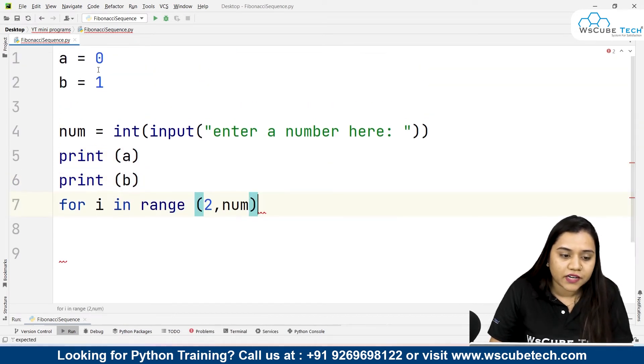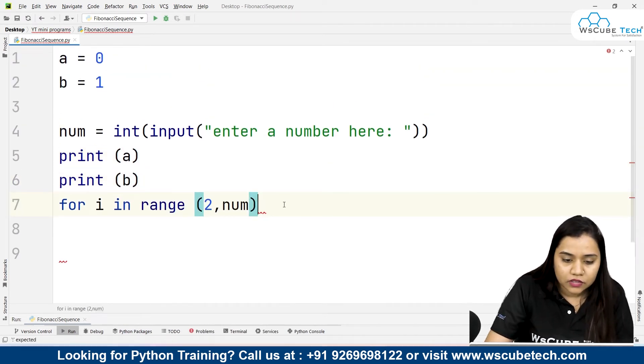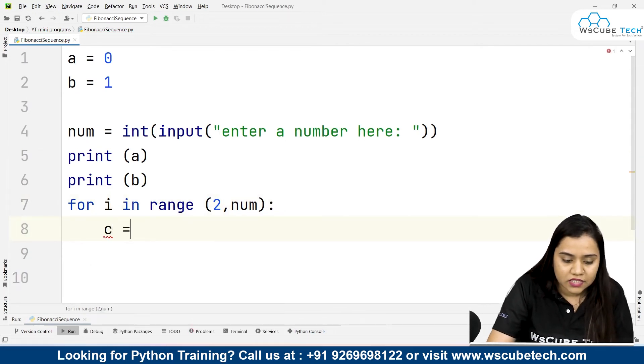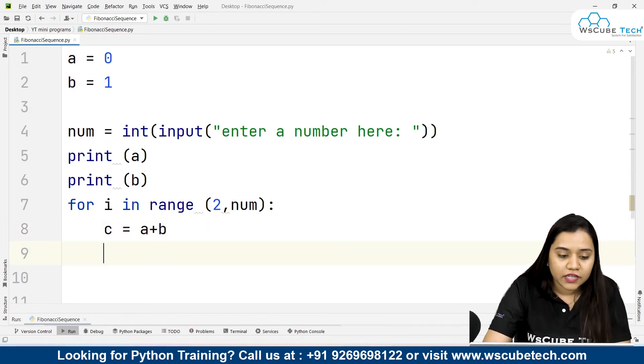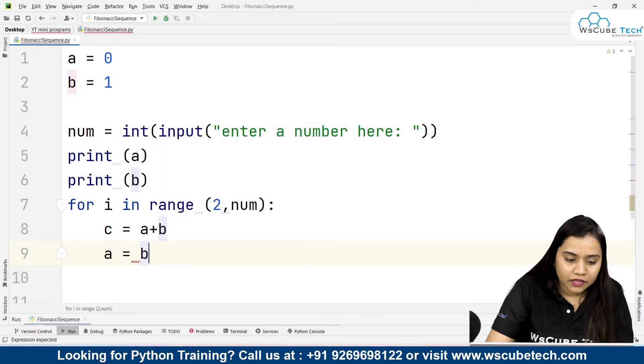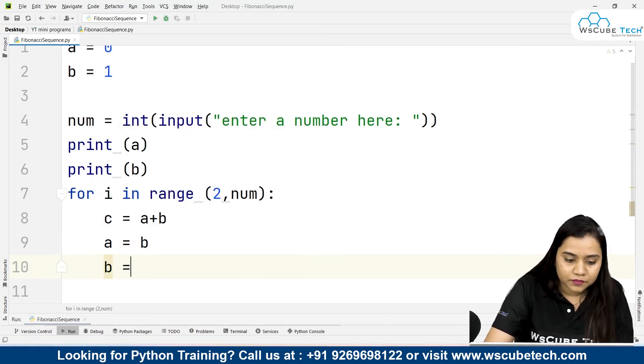The third element, we will get the third element by the addition of A and B. So we will be writing over here, creating a new variable, C is equals to A plus B. After adding A plus B to C, A will become B and B will become C.